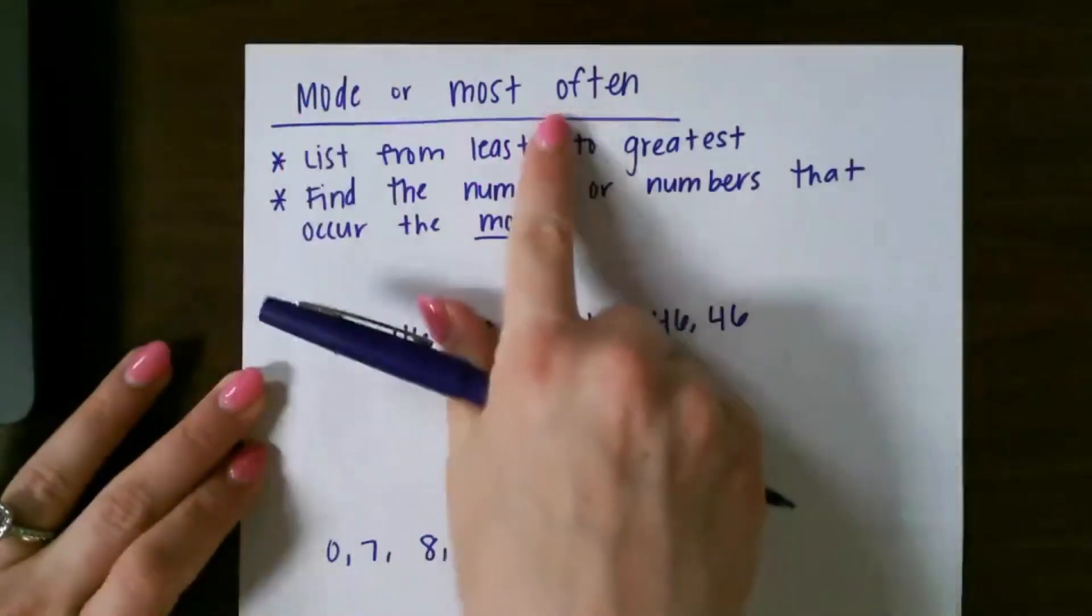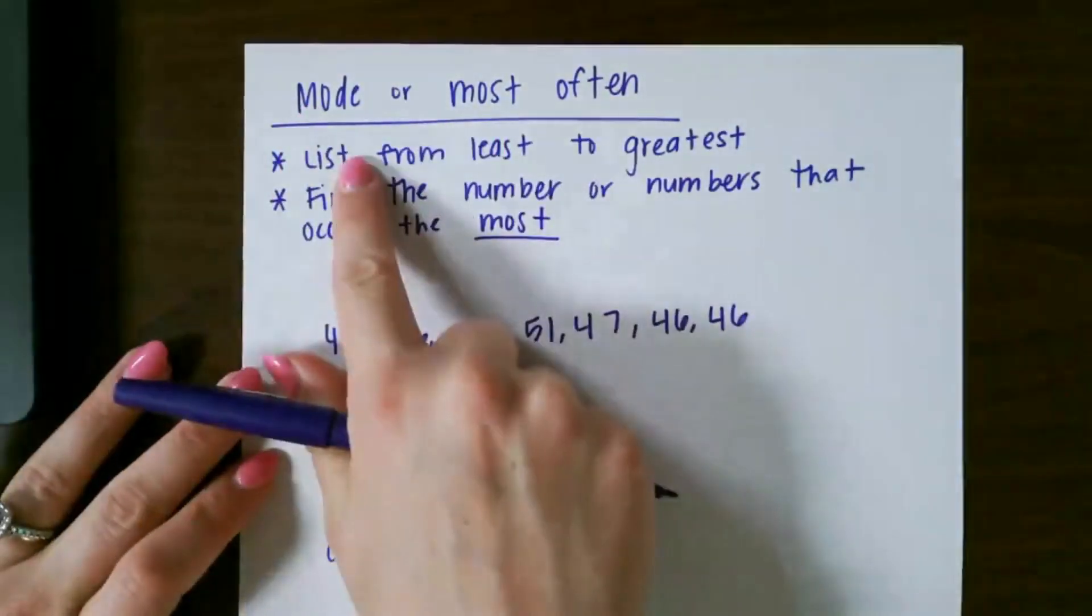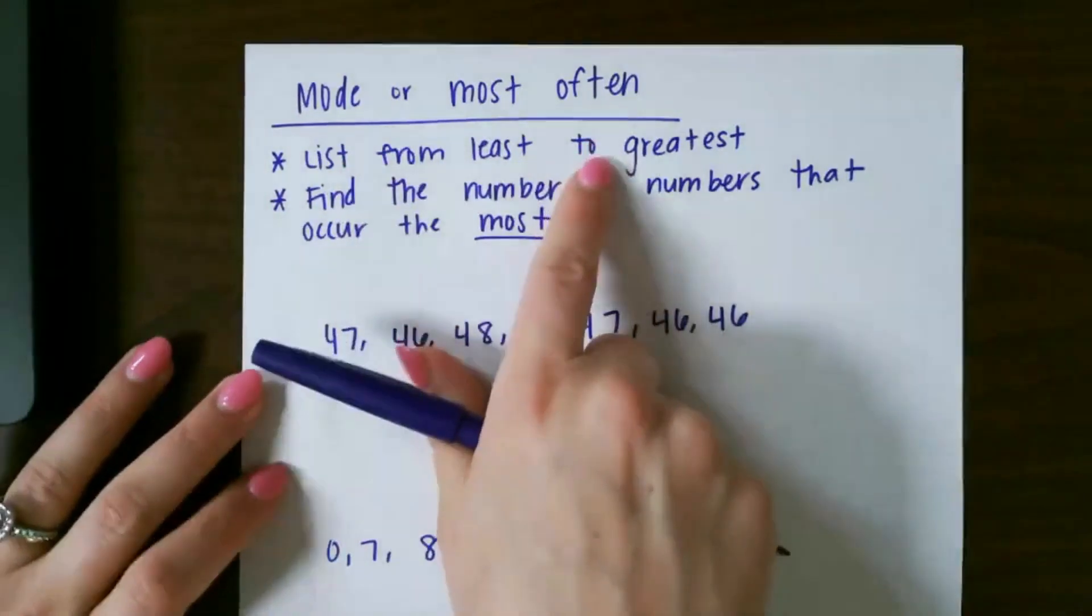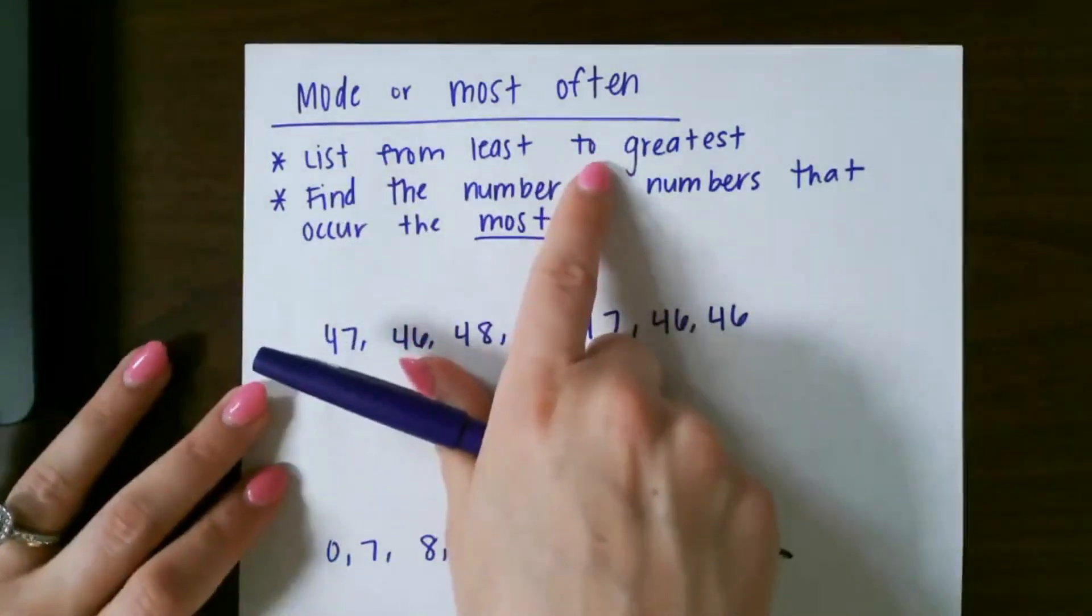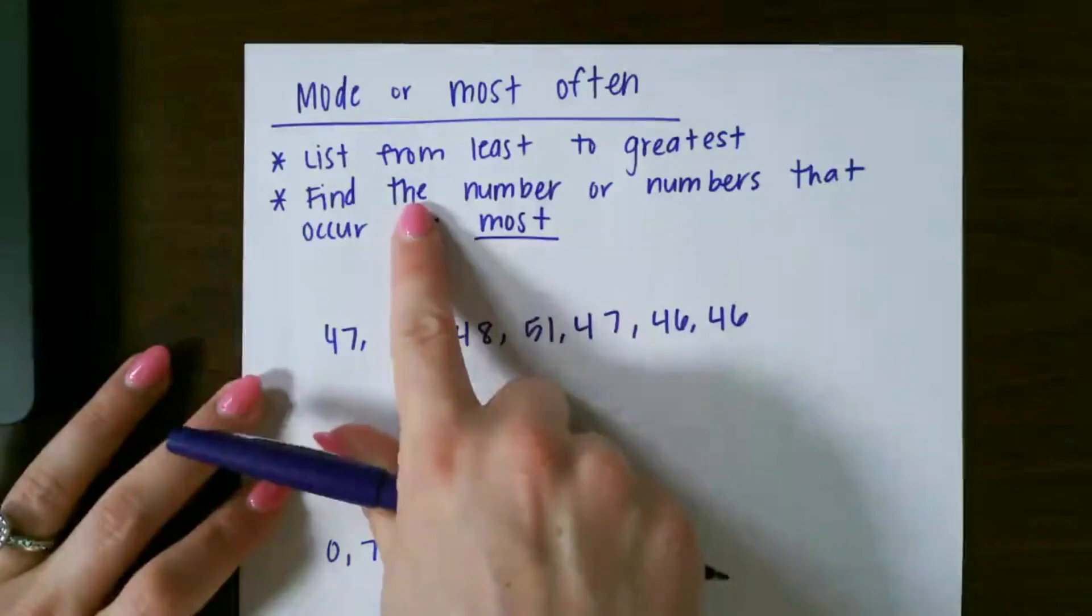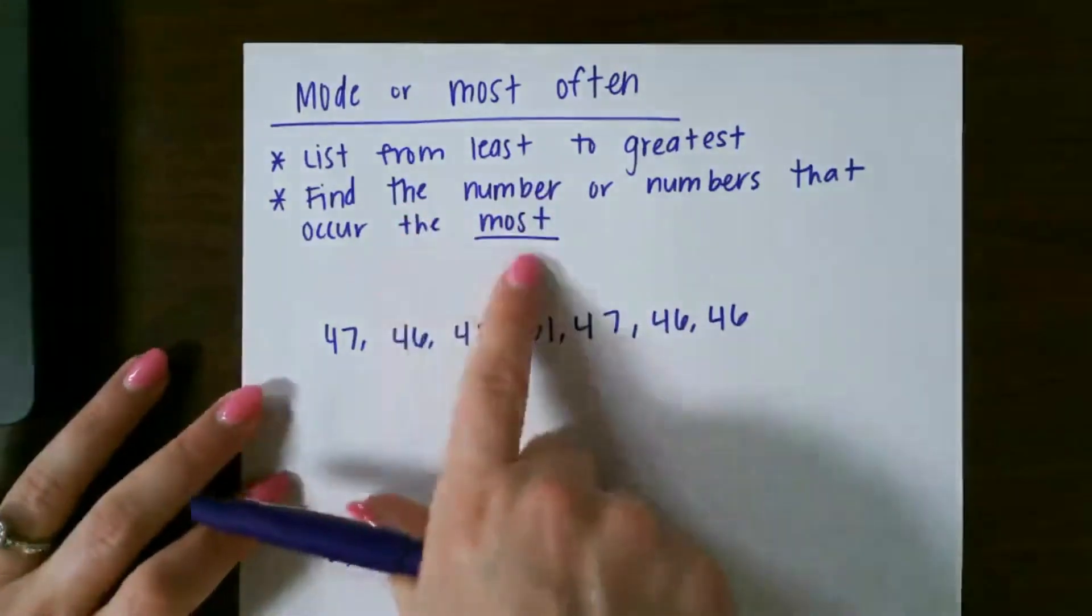Let's look at mode, or most often. List the numbers from least to greatest. This is not necessary, but it helps you to see each of your numbers and find the number or numbers that occur the most.